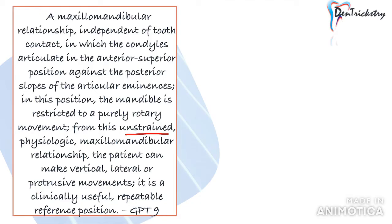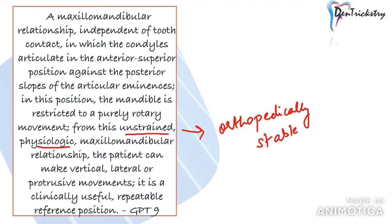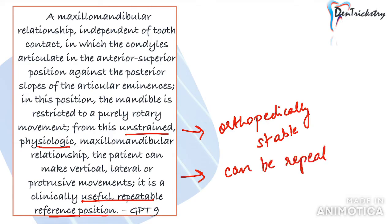Centric relation is considered to be the most comfortable and orthopedically stable position. Why is centric relation useful? It is because it is a repeatable reference position. For example, in an edentulous patient who has no teeth, we always take centric relation as a reference for teeth arrangement because it can be repeated and found consistently. This makes it popular for clinicians.